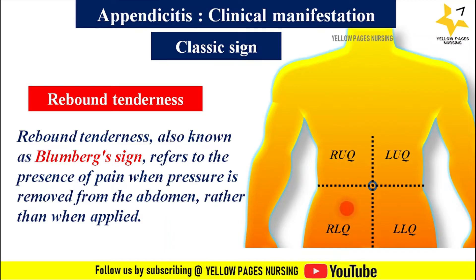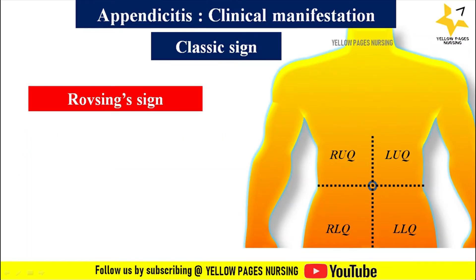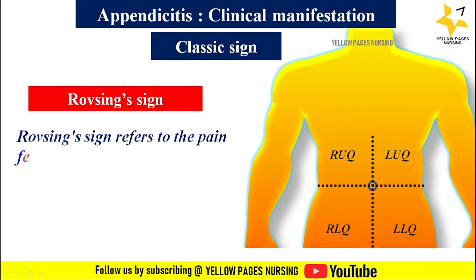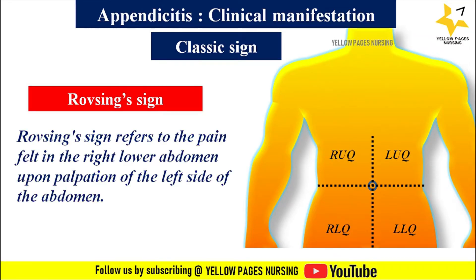Next is Rovsing's sign, which refers to pain felt in the right lower abdomen upon palpation of the left side of the abdomen. A positive Rovsing's sign is indicative of acute appendicitis, characterized by inflammation, infection, or swelling of the appendix.